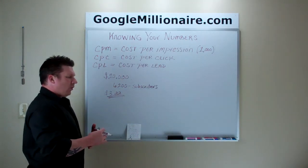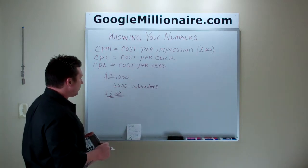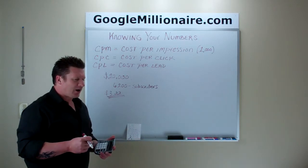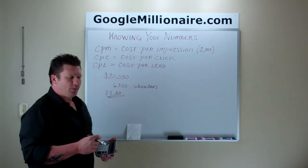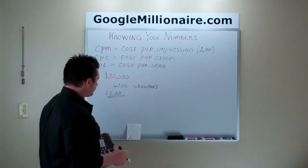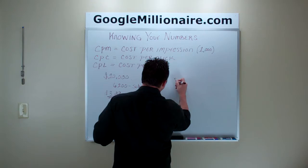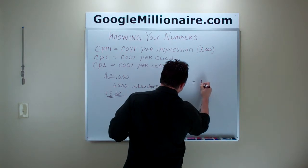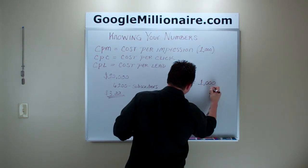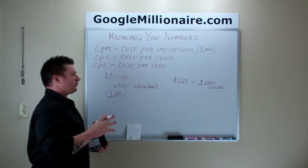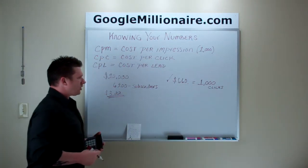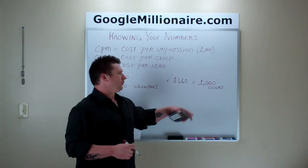Now, all the top marketers know and focus on one thing. This is what I'm about to show you — a few of the top guys talk about this, but most people don't, and for some people it takes years to figure this out. I'm going to use another example. Let's just say I place a solo ad, and this solo ad is going to cost me $660 for 1,000 clicks. So I'm going to place a solo ad and spend $660 for 1,000 clicks.